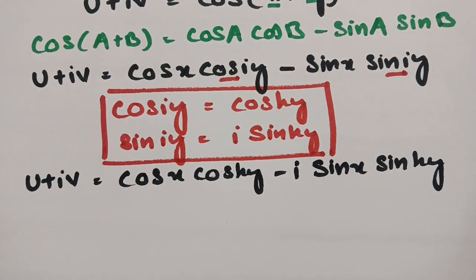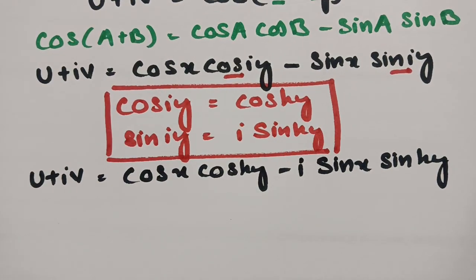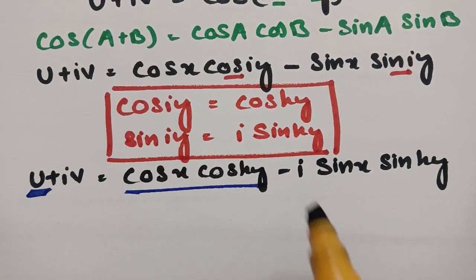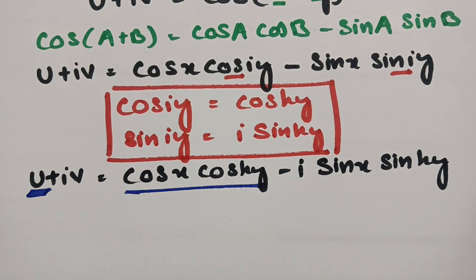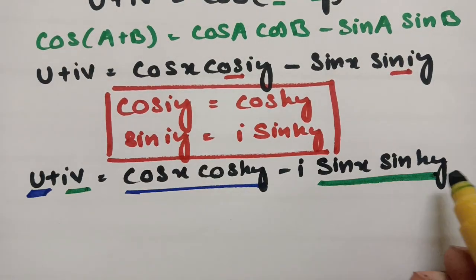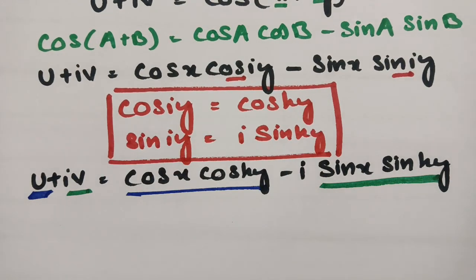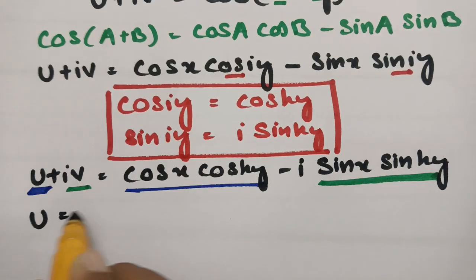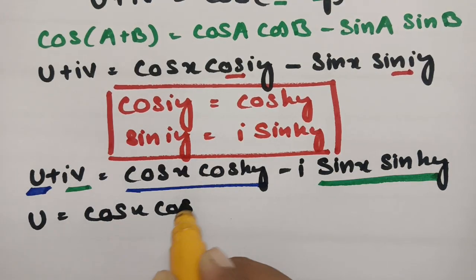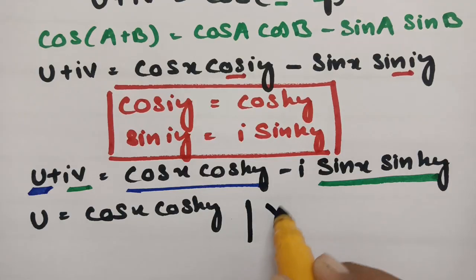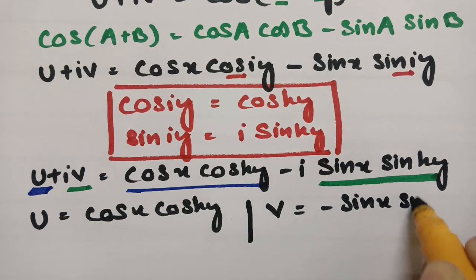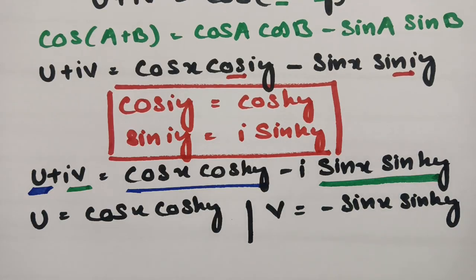After writing this clearly, we separate the real and imaginary parts. So U equals cos X cosh Y (equation 1), and V equals minus sin X sinh Y (equation 2). These are our two key equations, and there are two cases to consider.